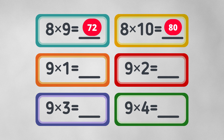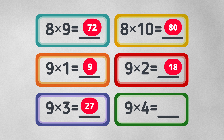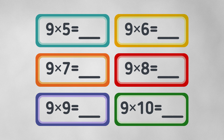Nine times one equals nine. Nine times two equals eighteen. Nine times three equals twenty-four. Nine times four equals thirty-six. Nine times five equals forty-five. Nine times six equals fifty-four.